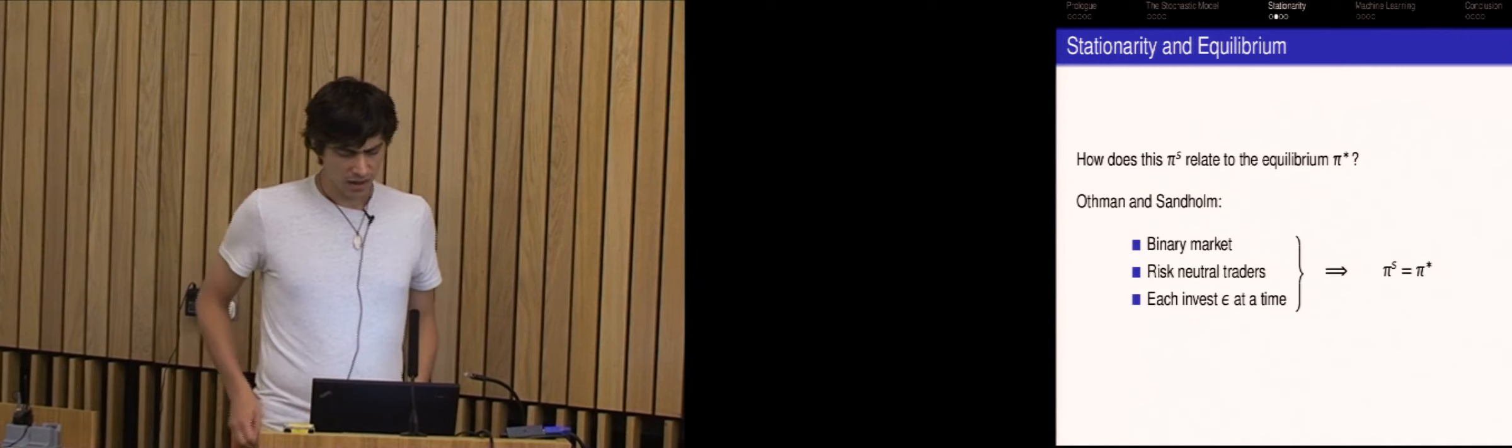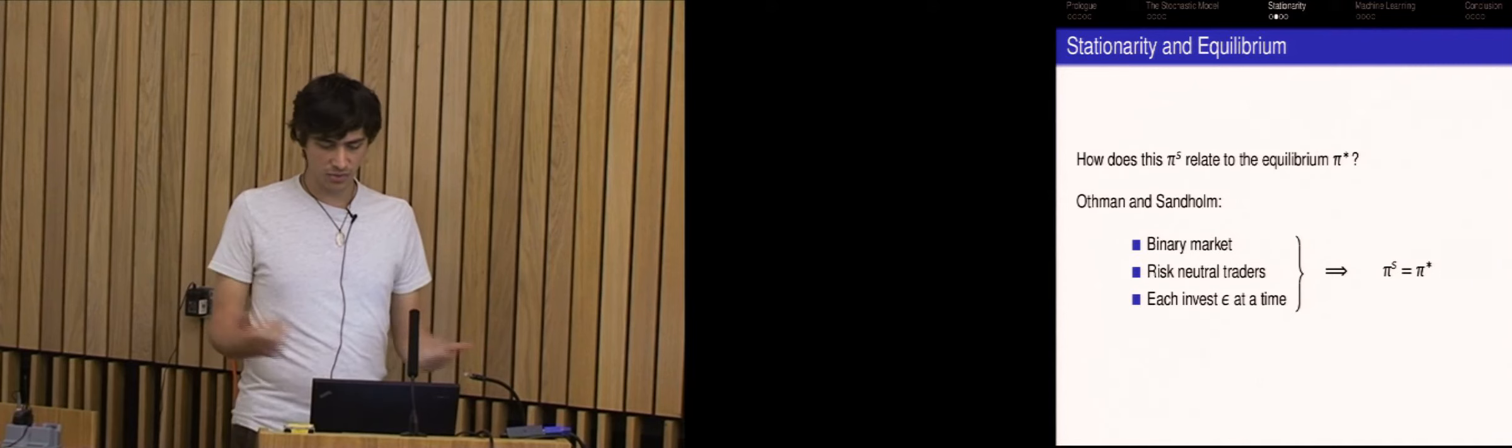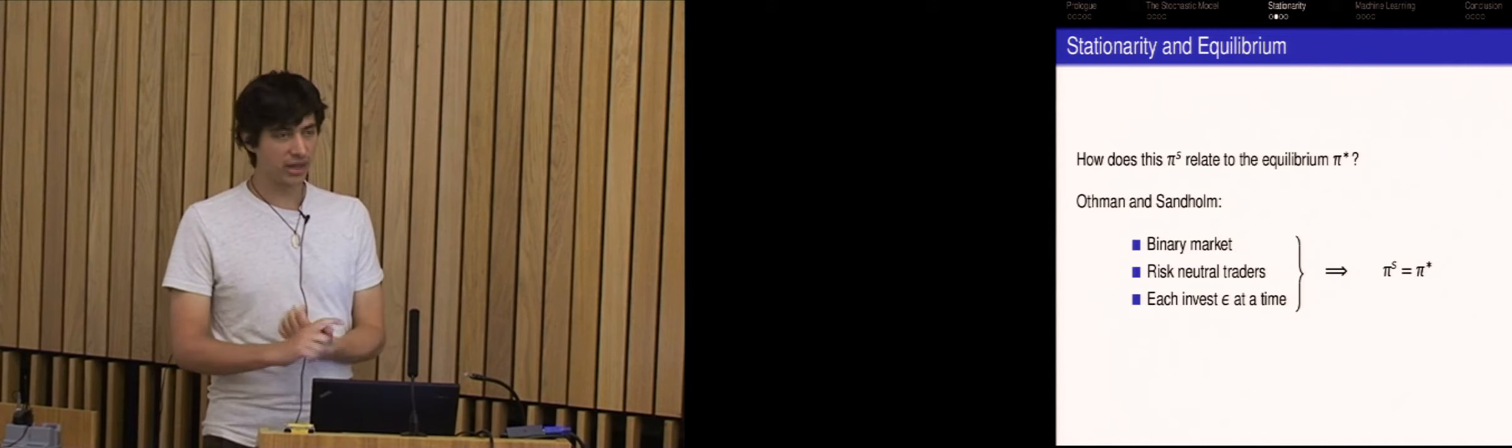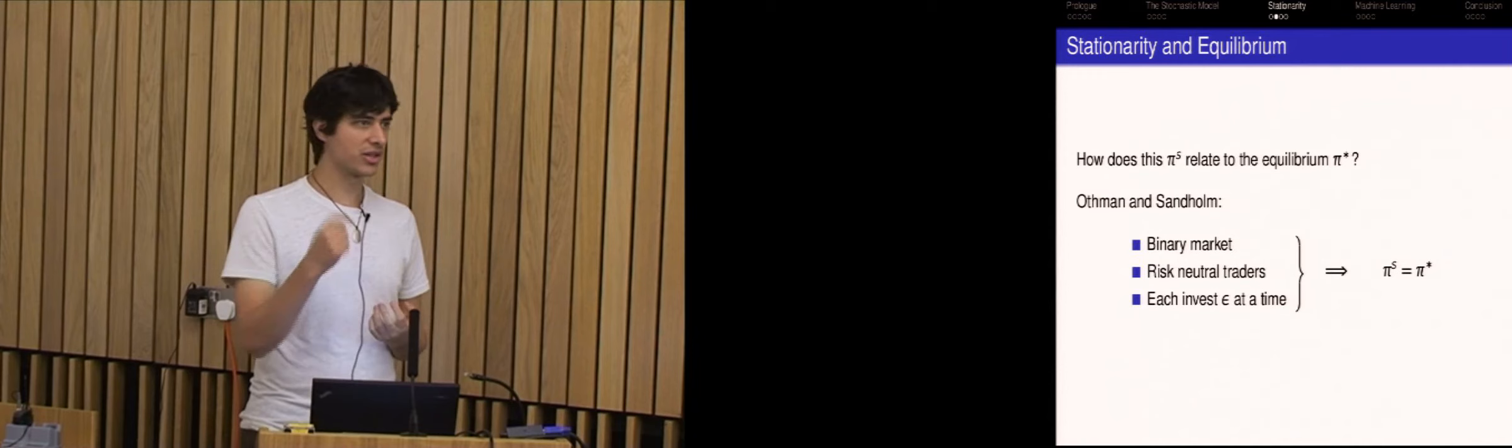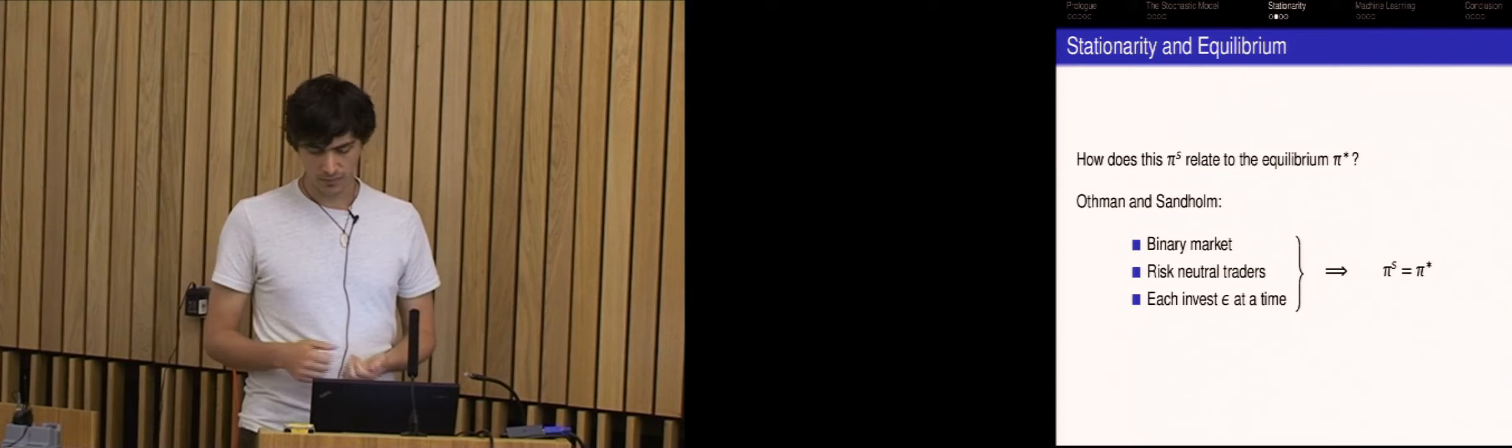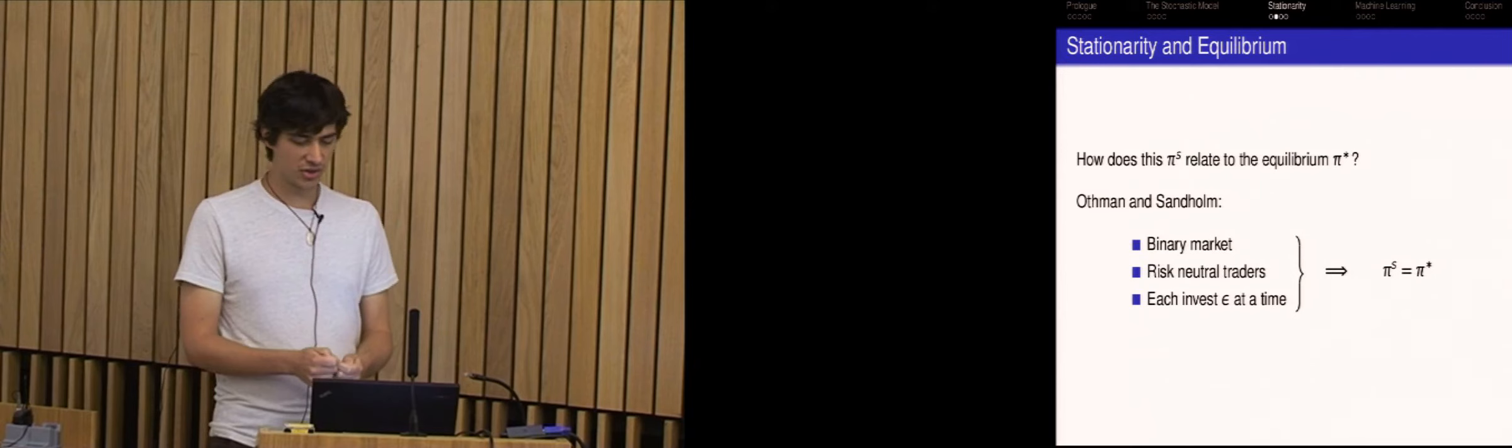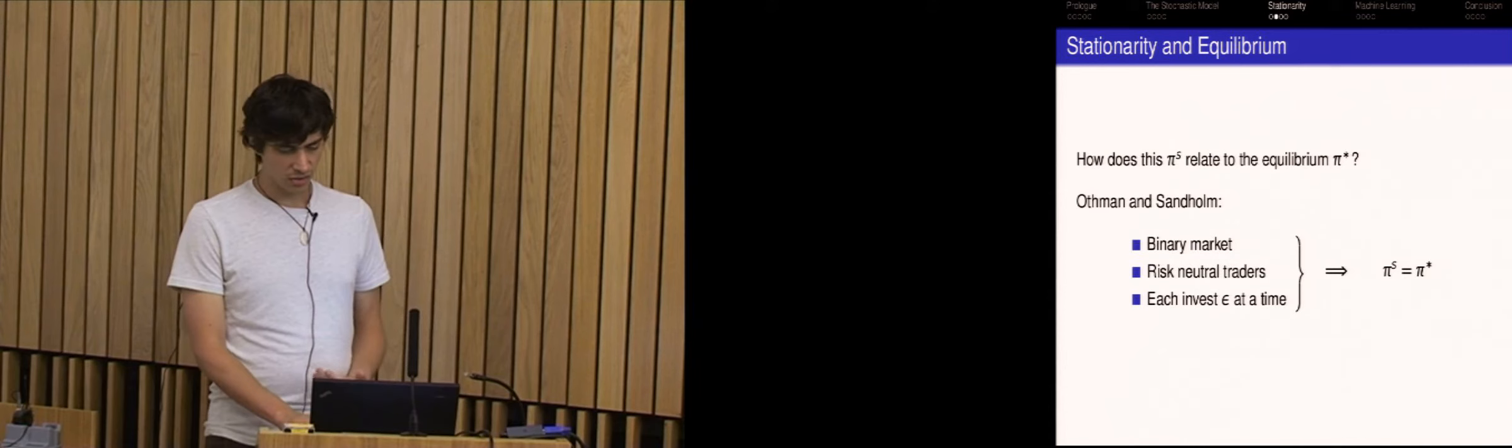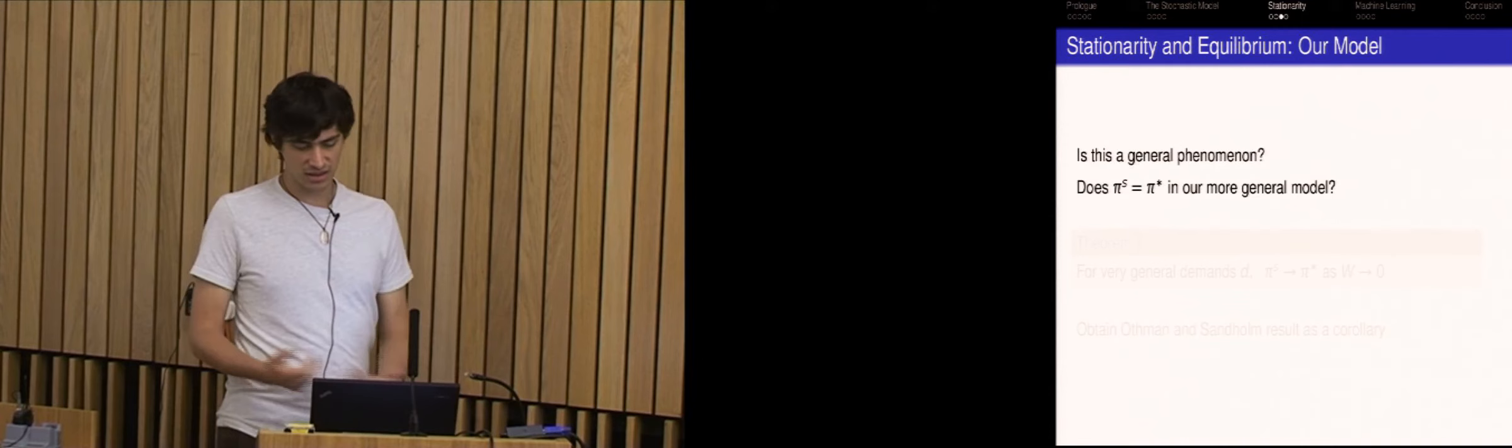And by that I mean what prices pi_t satisfy that the expected update stays the same? So the expected value of the next prices are actually equal to the current prices. This is some notion of equilibrium, but obviously it's a very different notion. And we'll define this point, the stationary point to be pi_s. And basically in the paper we assume enough about the demand so that this is unique. Now, natural question of these two sort of notions of equilibrium is how do they relate?